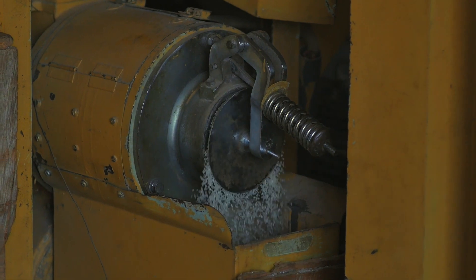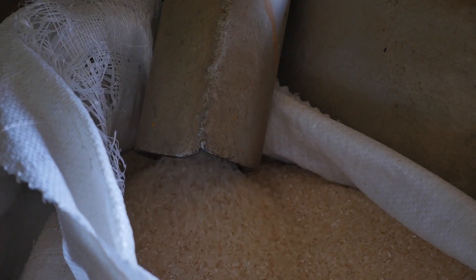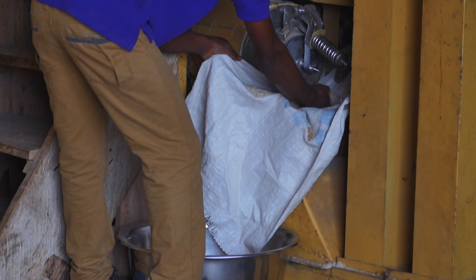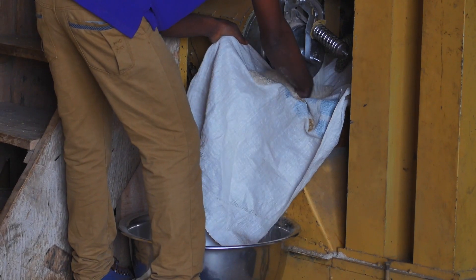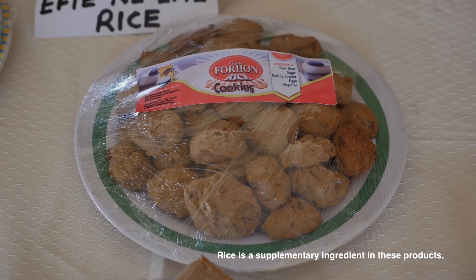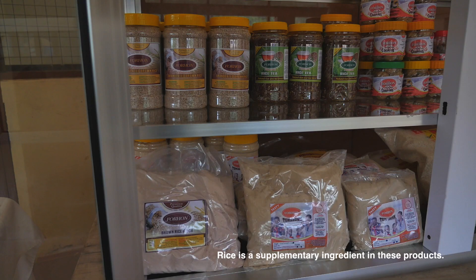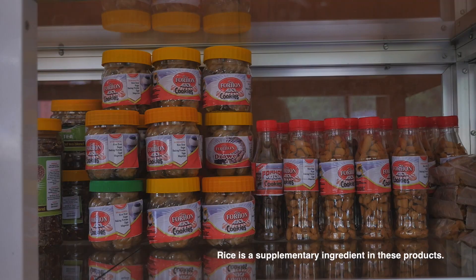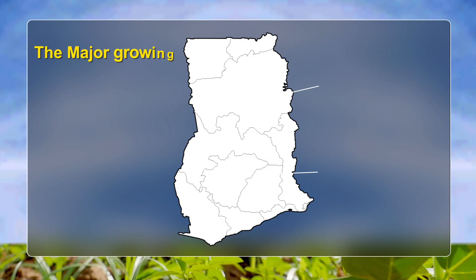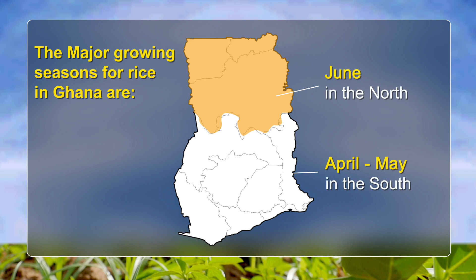Rice has become the second most important food staple after maize in Ghana, and its consumption keeps increasing as a result of population growth, urbanization, and change in consumer habits. The major growing seasons for rice in Ghana are June in the north and April to May in the south.